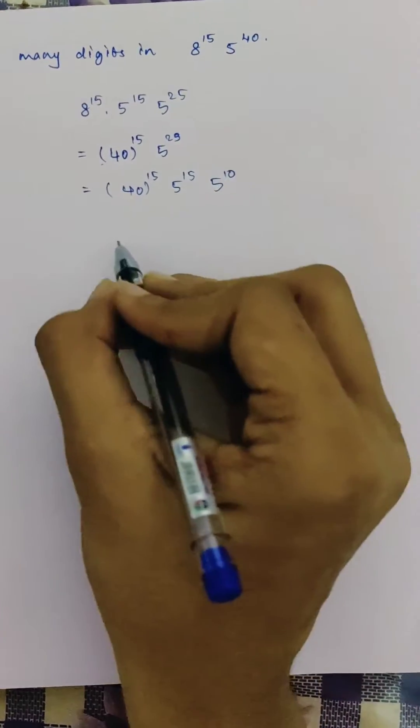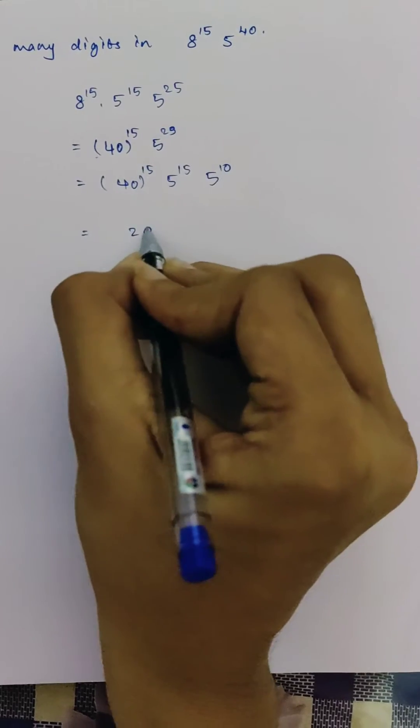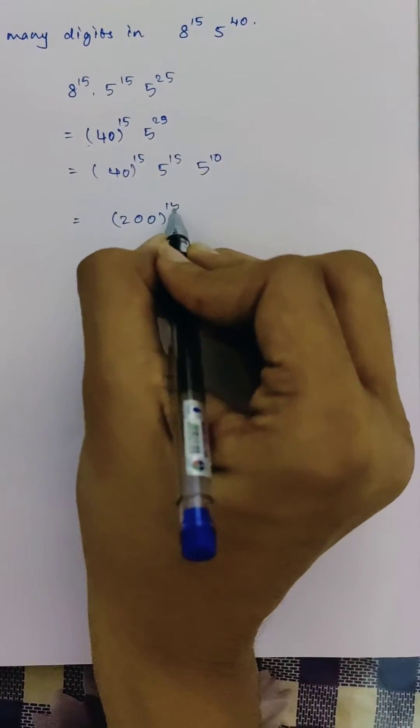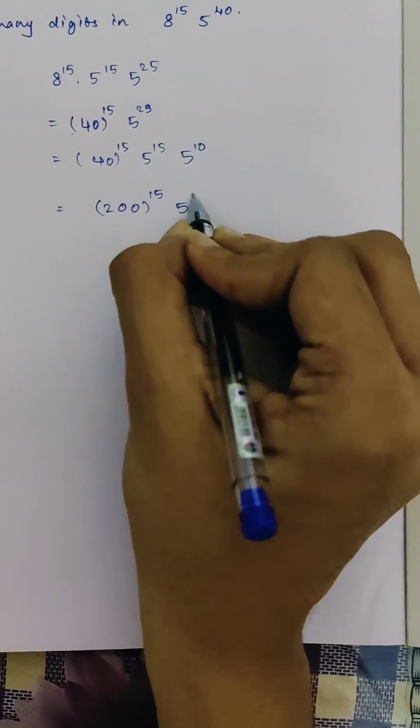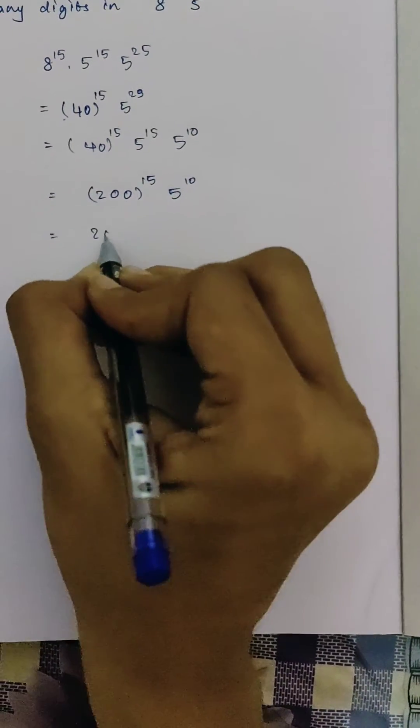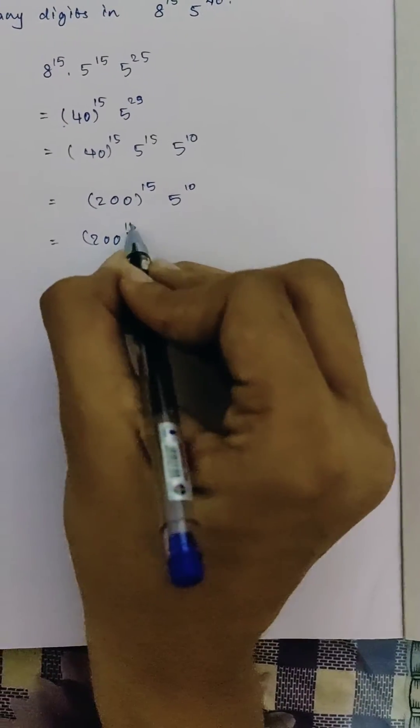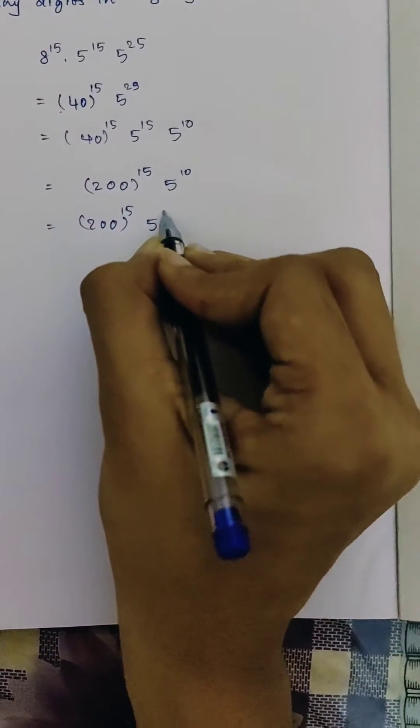Now we can write it as 200 power 15 into 5 power 10. In the next step we can split 200 power 15 as 200 power 10 and 200 power 5.